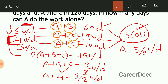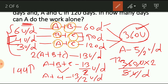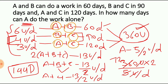The total work to be completed is 360 units. These 360 units will be completed by A with an efficiency of 5 by 2 units per day. So 360 divided by (5 by 2) — keeping the 2 in numerator — gives 360 by 5, which is 72, then 72 into 2 equals 144. So in 144 days, A alone will complete the whole work.